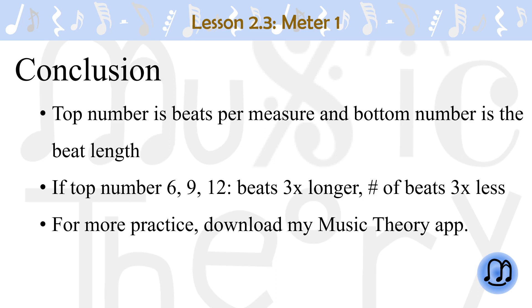In conclusion, when the top number is 6, 9, or 12, the beats are 3 times what the bottom number indicates, and the number of beats is the top number divided by 3. For more practice, please download my music theory app. In the next lesson, I am going to talk more about types of meters, subdivision, and beat organization. See you next time!